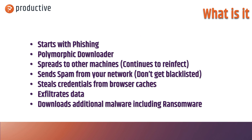It starts with a phishing attack, much like most threats today — I think over 90% originate there. The link is going to give you a polymorphic downloader, and what that means is the code changes every single time it gets downloaded, so it is impossible to detect with a signature-based system. It rapidly spreads to other machines in your network, steals emails and email addresses you've already sent out, and it can then start spamming them from your network, which can get you blacklisted.